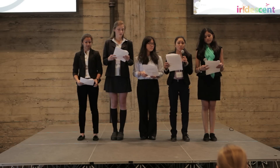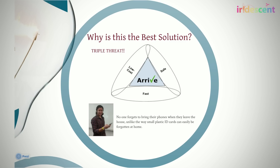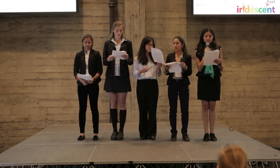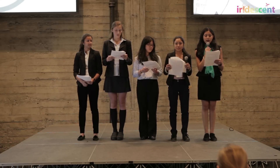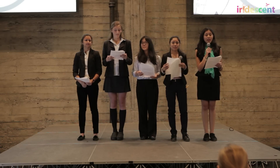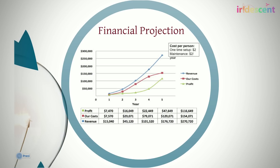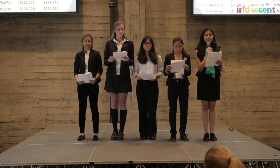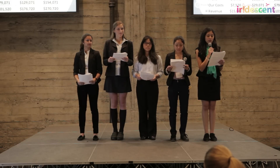ARRIVE is the triple threat — it's inexpensive, it's fast, and it's safe. Our financial projection for the next five years shows that ARRIVE will consistently earn a profit. In the first year, we plan to sell to our association of eight independent schools in our local area, and in the following years we would expand to other private schools in New York State.